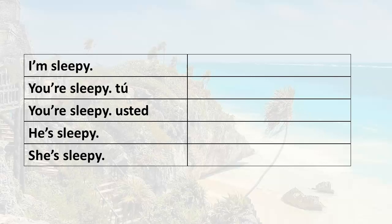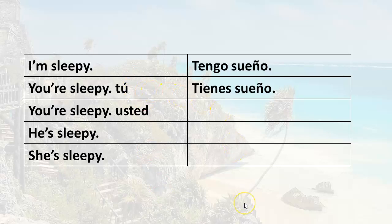So now that you get the idea, let's go ahead and apply what you've learned. You know how to say 'I'm sleepy' — tengo sueño. How would you say 'you're sleepy'? This is just a statement. Somebody that you know well, you're using tú — tú tienes sueño, tienes sueño. You're sleepy using usted.